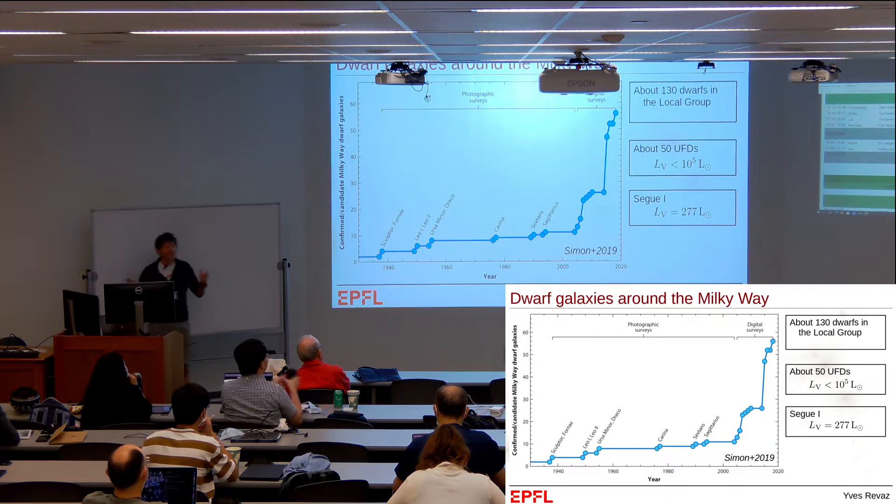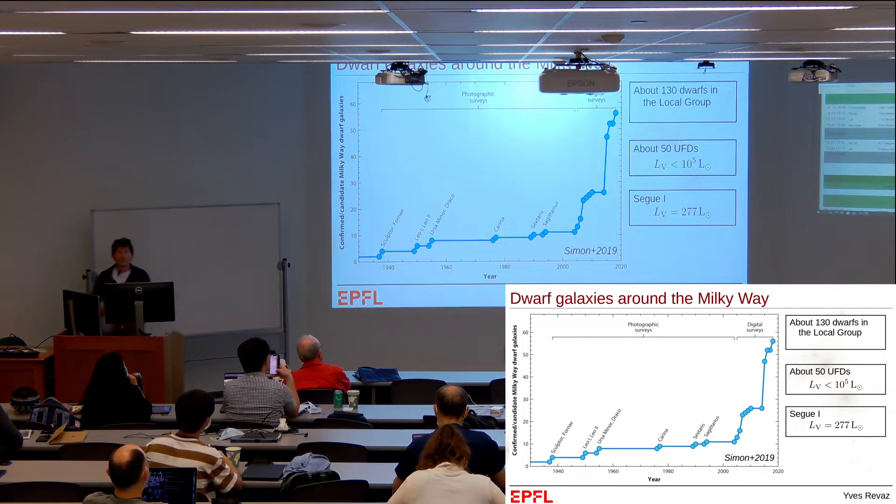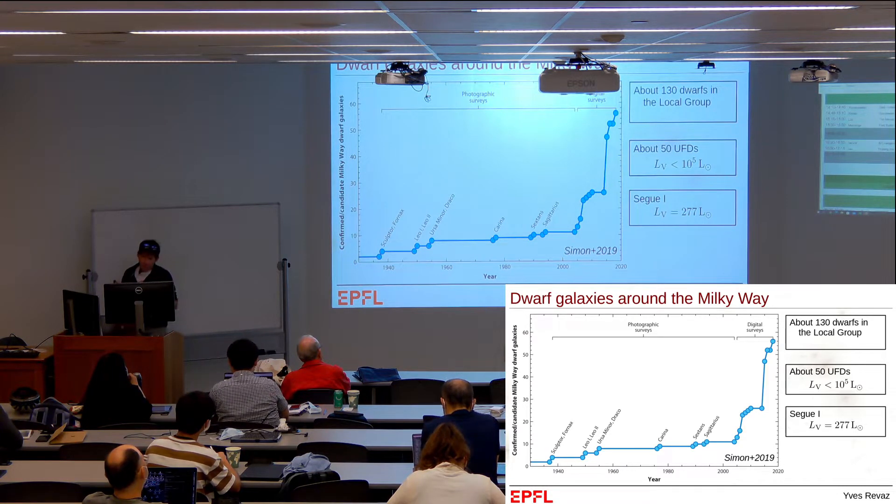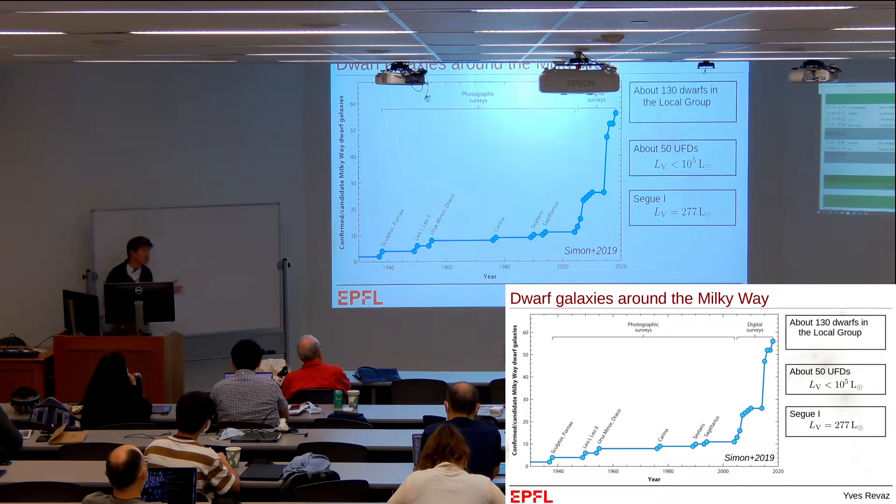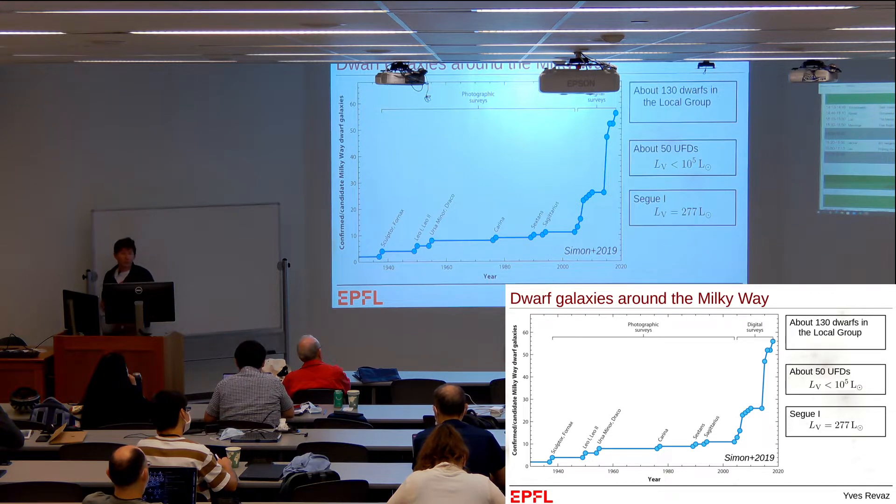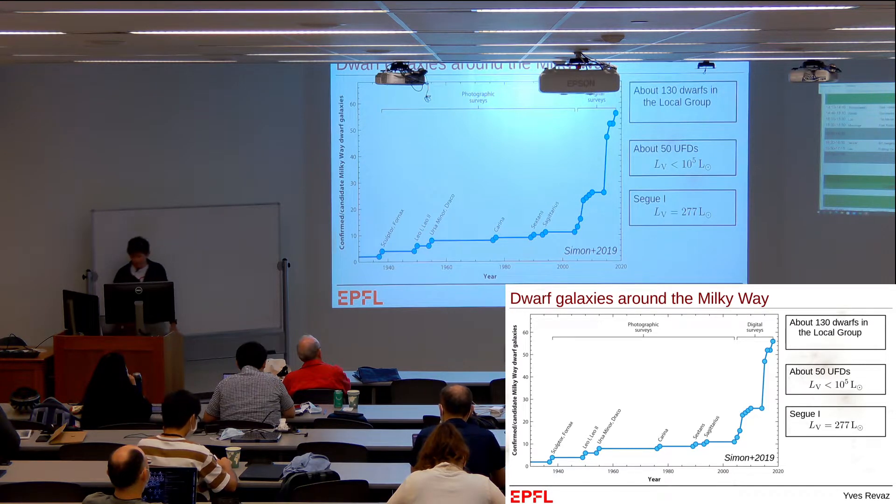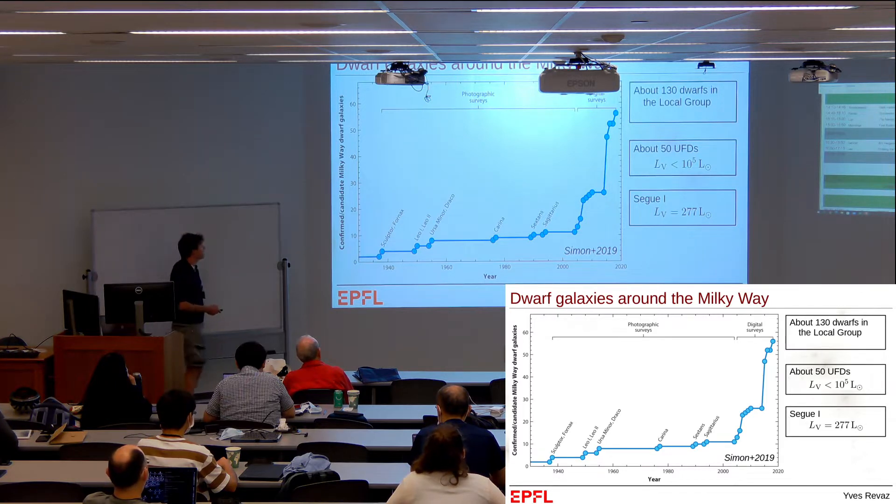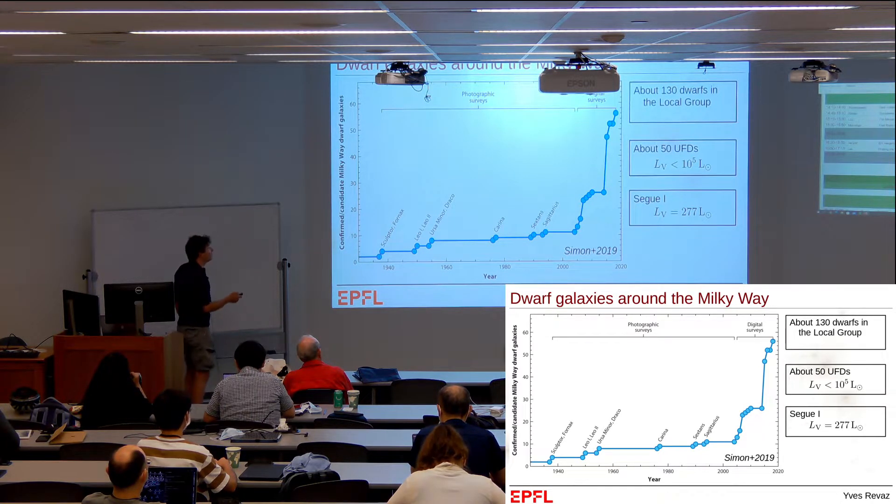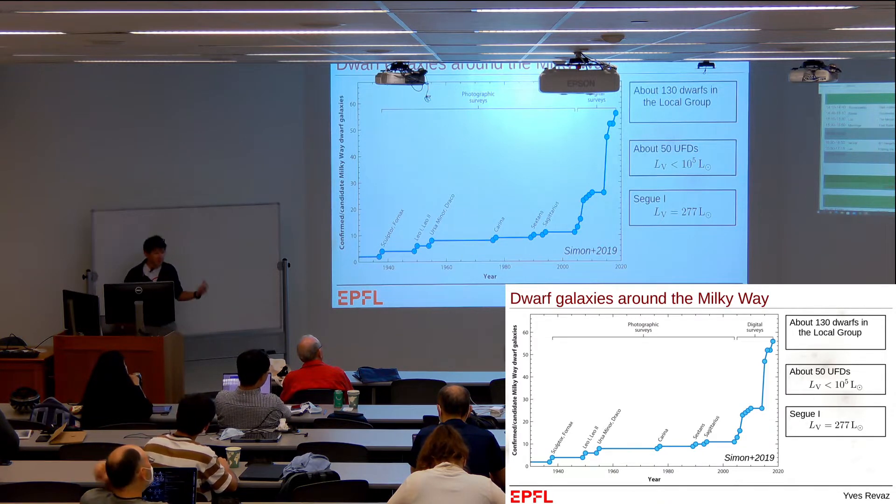Dwarf galaxies are the most abundant objects in the universe by number, though they're the faintest ones. They may have played a major role during the epoch of reionization and are probably building blocks of larger systems. Thanks to deep surveys, the number of known dwarf galaxies around the Milky Way has increased from 12 at the beginning of this century to 60 now, and up to 130 in the local group.